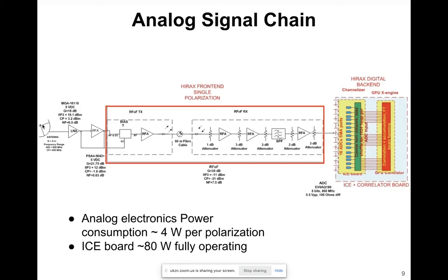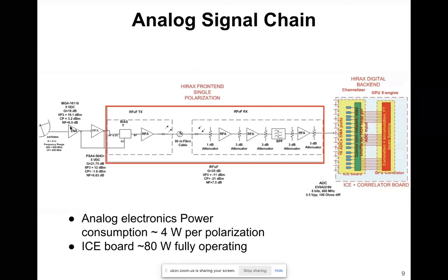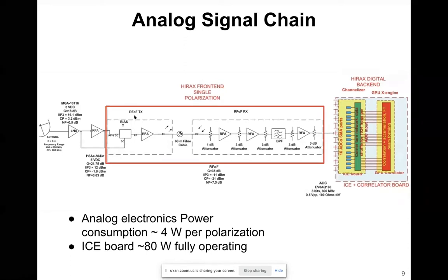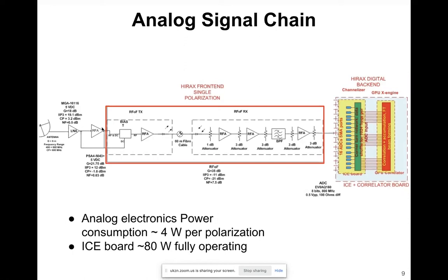This is our analog signal chain. The feed detects the signal from the sky. The LNA determines our sensitivity and noise temperature. A second stage amplifier provides further amplification, and then the signal from the antenna is transported on an optical link into the control room. The RFoF fiber transmitter converts the electrical signal from the second stage amplifier to an optical signal, which is coupled into the fiber cable.